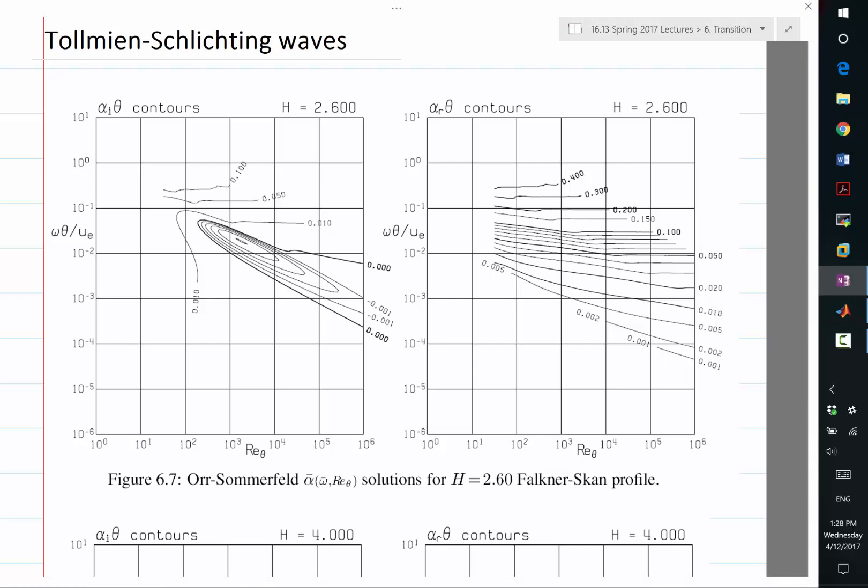When you solve the Orr-Sommerfeld equation, you fix a particular frequency and look at the eigenvalues in the spatial evolving direction. This is the second parameter.